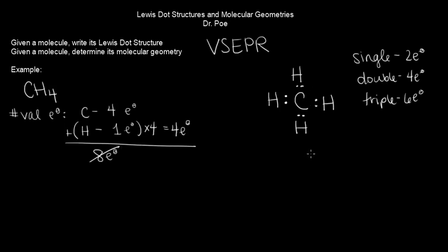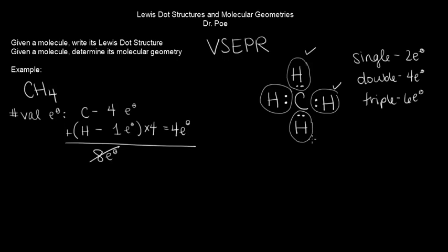Now we check to make sure the octet rule is satisfied. Remember, hydrogen is an exception because it's close to helium — helium only needs two electrons. Each hydrogen has two electrons, so they're all happy. Now for carbon: since these are covalent bonds, electrons are shared equally. Counting everything in carbon's shell — 1, 2, 3, 4, 5, 6, 7, 8 — carbon needs eight and has eight, so its octet is satisfied. We can now replace the electron pairs with single lines.